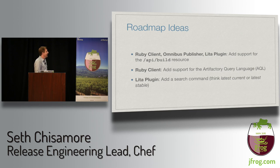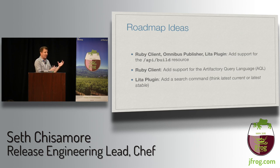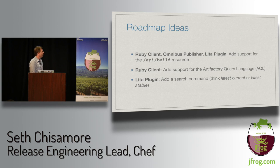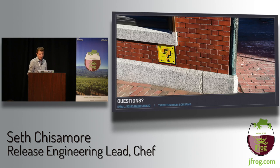For the upcoming roadmap: I want to teach the Ruby client, Omnibus publisher, and Lita plugin how to use the build resource — actually mapping an Omnibus build to an Artifactory build so we can promote the whole build versus copying a set of artifacts around. It would also be nice to add AQL support to the Ruby client for better queries. For the Lita plugin, we'll be adding search commands for things like 'give me the latest current or stable version of a project.'